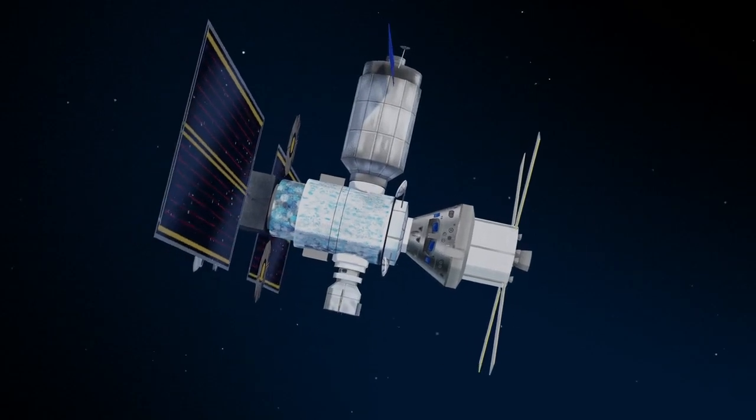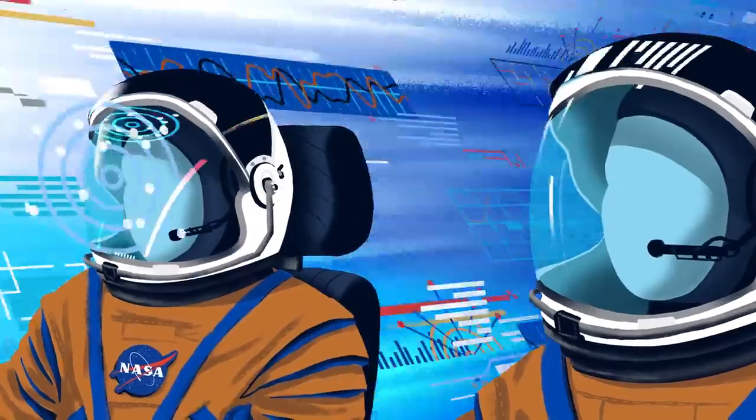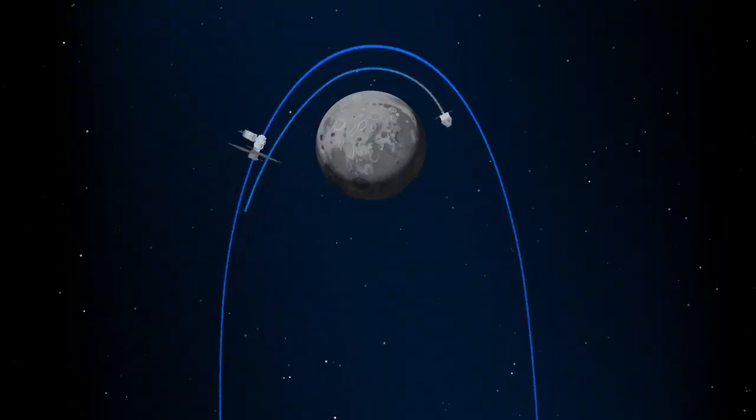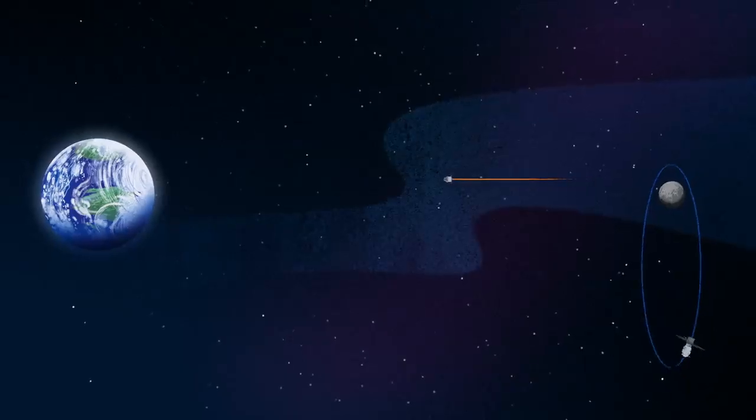Once back aboard the Orion spacecraft and undocked from Gateway, the crew fire their engine once to break out of the halo orbit, and once again to sling the spacecraft around the Moon, placing it on a multi-day trajectory back towards Earth.